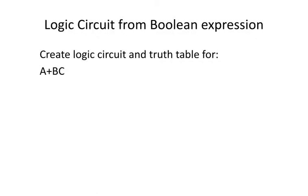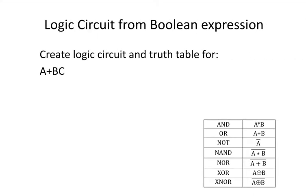I want to create a logic circuit and truth table based on this Boolean expression. I see in this Boolean expression that I've got a little plus symbol, which is going to tell me that I've got an OR in this digital circuit. And the B and the C are right beside each other representing the multiplication symbol, so I know that those two things are going to be ANDed together.